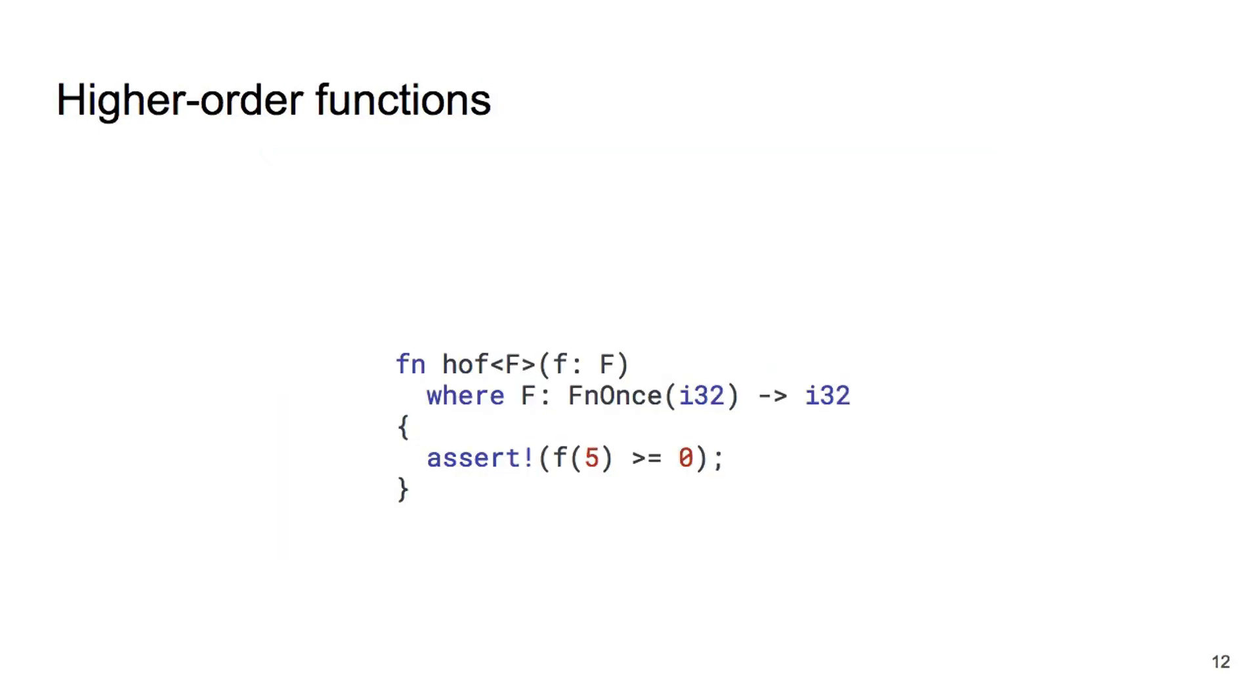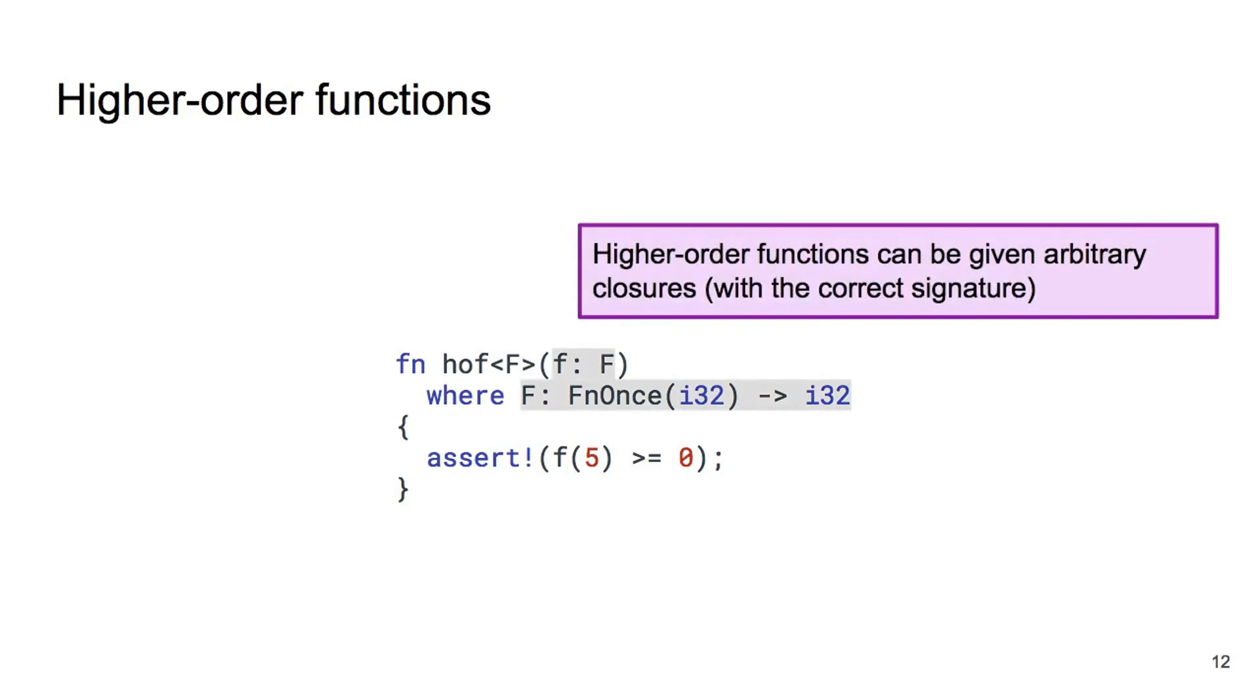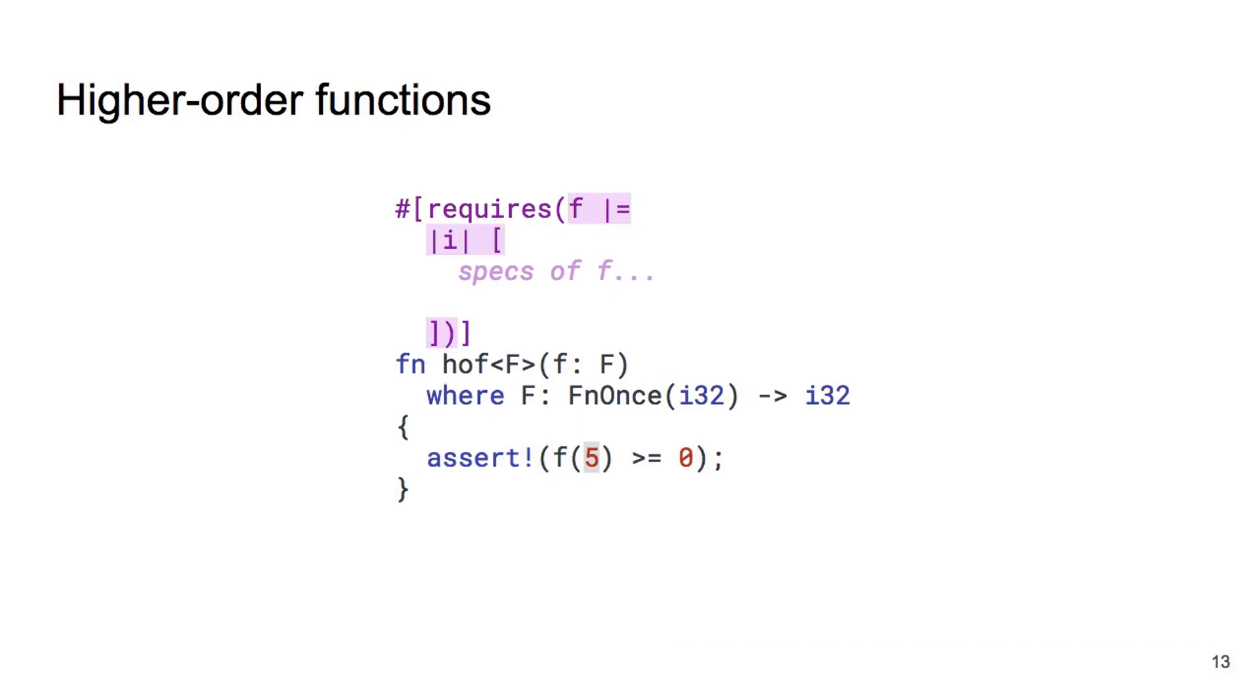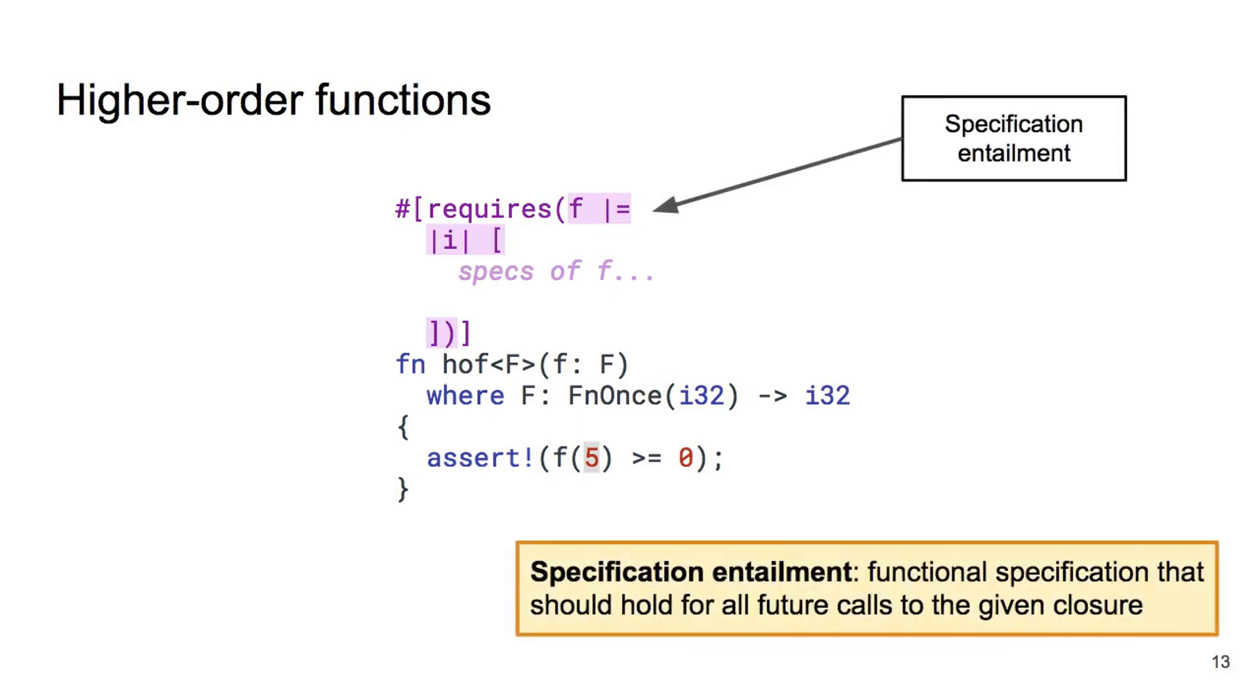Let's look at another example. Here we see a higher-order function, that is, function which accepts another function as an argument. Note that the type signature of HOF allows any closure to be passed as an argument, as long as it has the correct signature. So how can we ensure that HOF is only given closures which will cause the assertion in its body to always succeed? To do this, we introduce specification entailments into Prousty. A specification entailment expresses the expected specification for all future calls to a given closure.